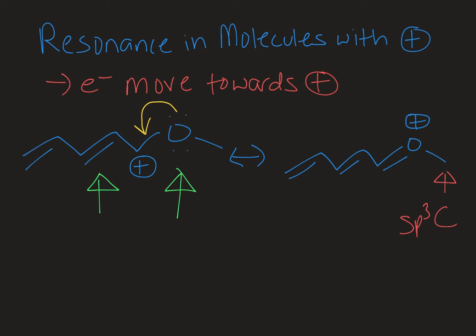And the presence of an sp3 hybridized carbon with four sigma bonds is typically going to be an indicator to you that you cannot complete any more resonance on that side of the molecule.